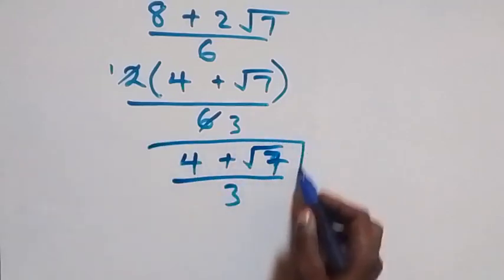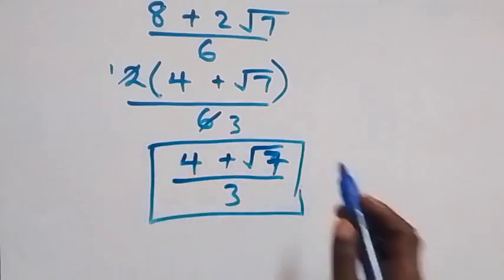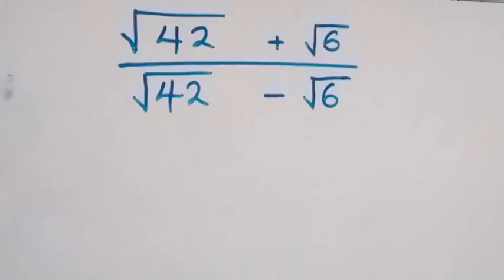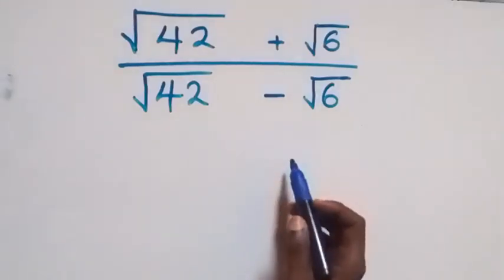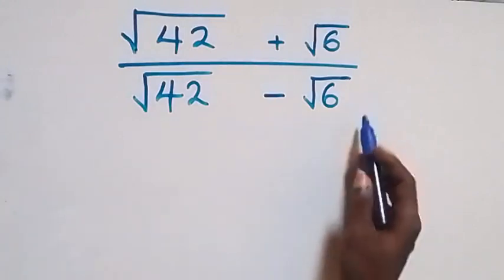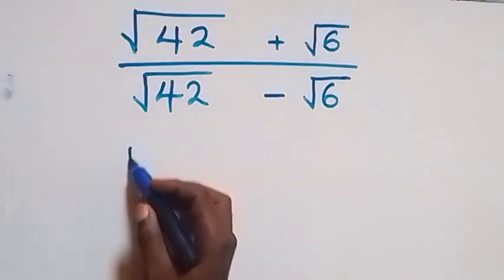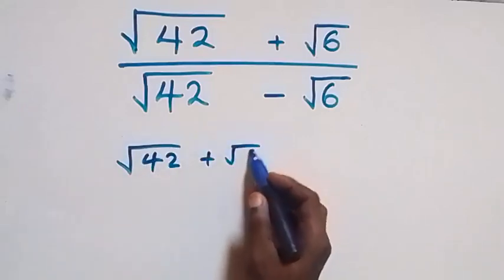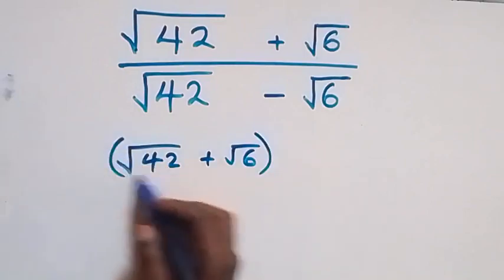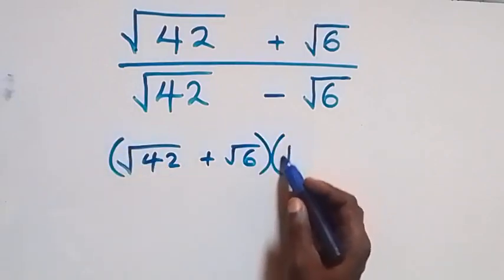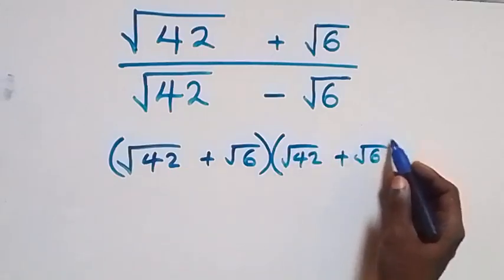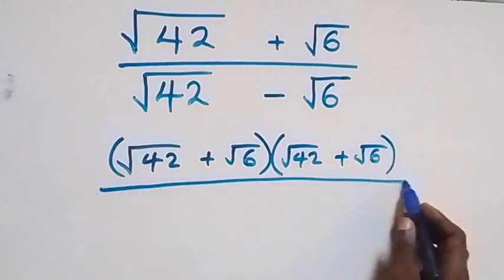So the solution to this problem is (4 plus root 7) over 3. Now let's use the second method. From here we can rationalize directly and multiply using the conjugate, so this becomes (root 42 plus root 6) multiplied by (root 42 plus root 6).